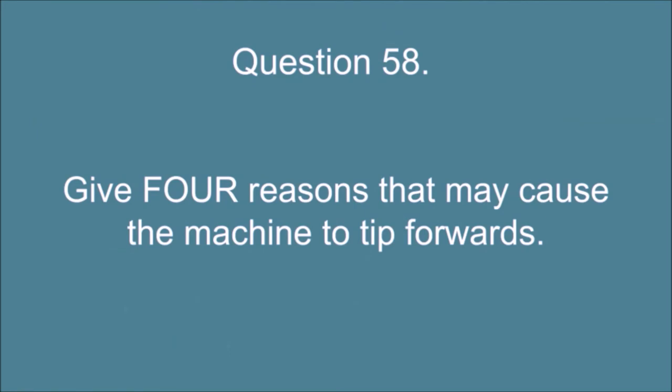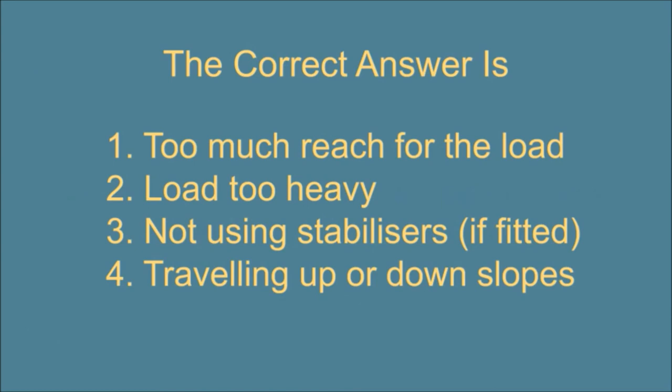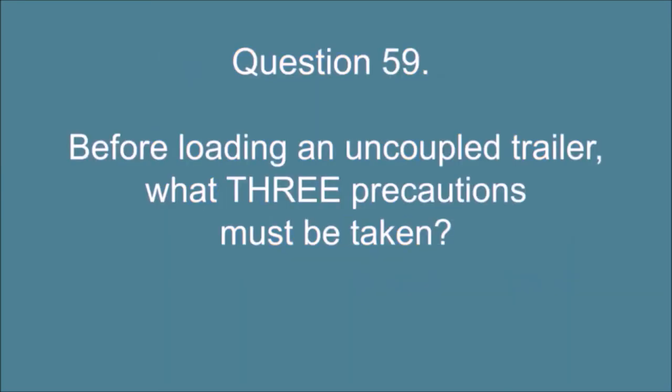Question 58. Give four reasons that may cause the machine to tip forwards. The correct answer is: 1. Too much reach for the load, 2. Load too heavy, 3. Not using stabilizers, if fitted, 4. Traveling up or down slopes.